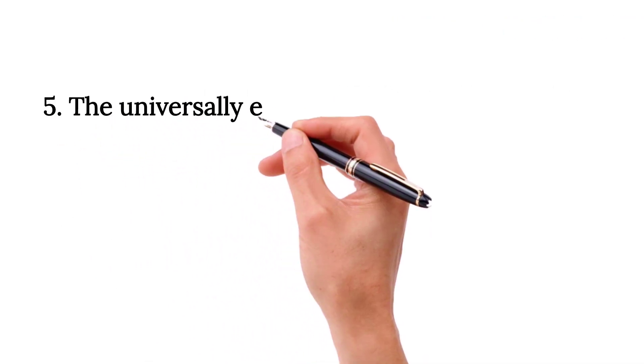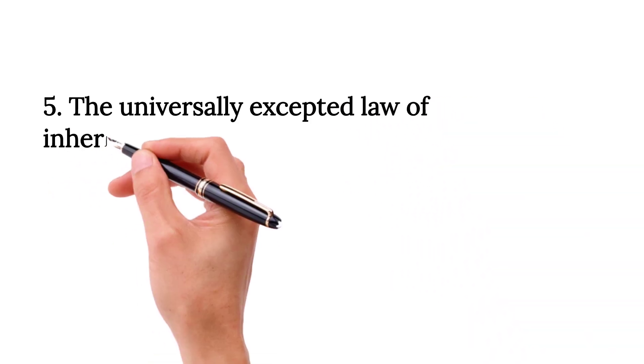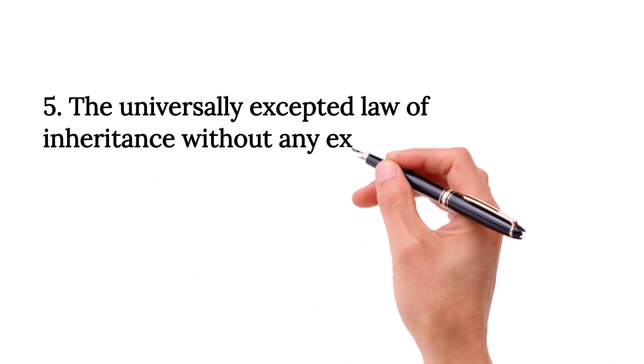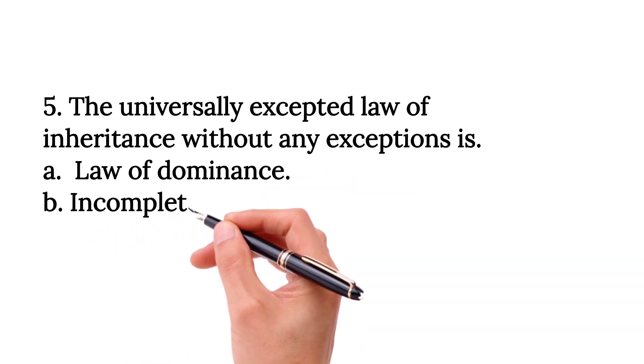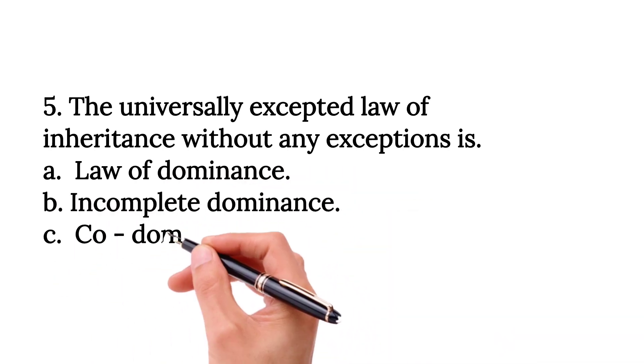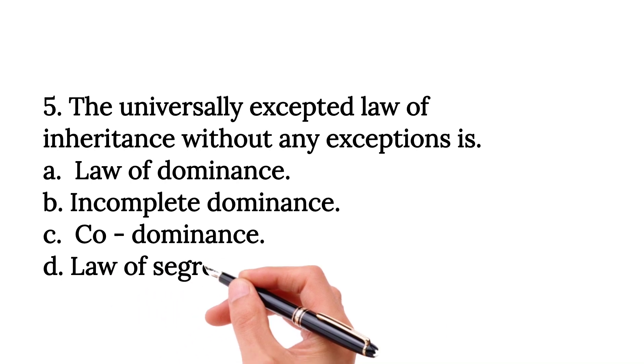The universally accepted law of inheritance without any exception is Option A, law of dominance, Option B, incomplete dominance, Option C, codominance, and Option D, law of segregation.